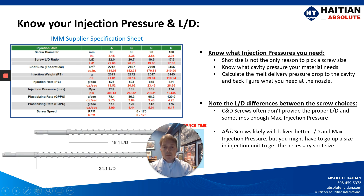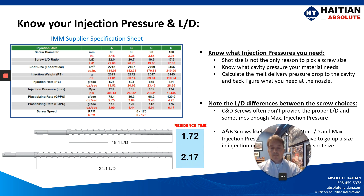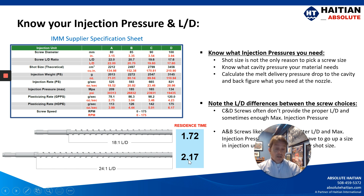Regarding the L over D of your screw: for a given shot size, a screw with an L over D of 18 might have a residence time of 1.72 minutes, whereas a 24 to 1 screw has a residence time of 2.17 minutes. That's a significant difference, and for some materials it may put you in or out of specification. Make sure you know what L over D you have.